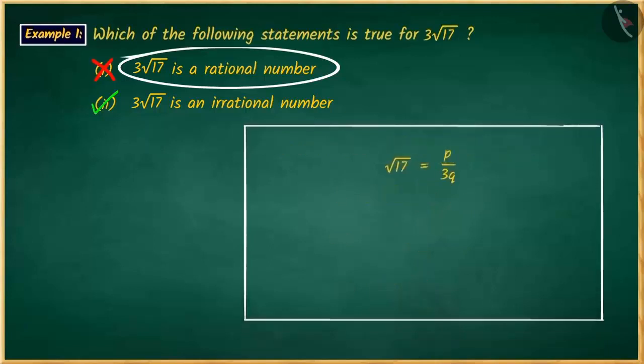You have determined that on the right-hand side, p and q are integers. So, p over 3q will be a rational number.